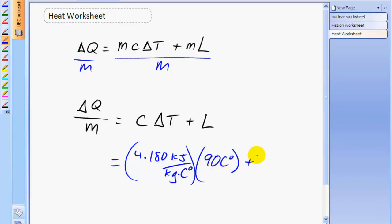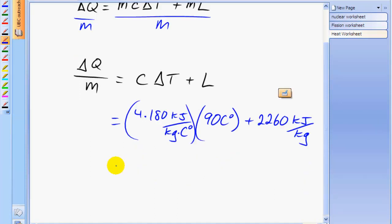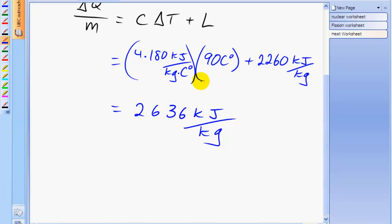And then we'll add to that the 2,260 kilojoules per kilogram of latent heat of vaporization. And this calculation says that 2,636 kilojoules are absorbed for every kilogram of water when it boils if it has an initial temperature of 10 degrees. And that's 2.6 megajoules per kilogram, which is maybe more convenient units to use.